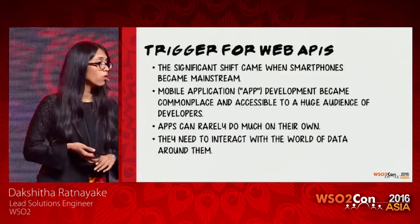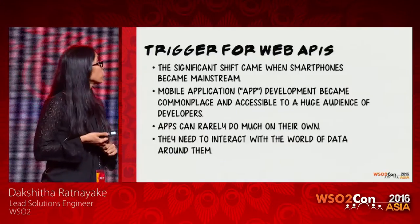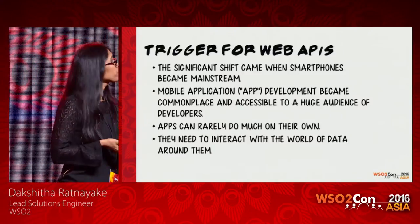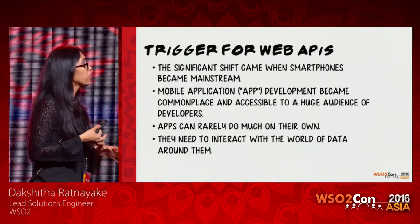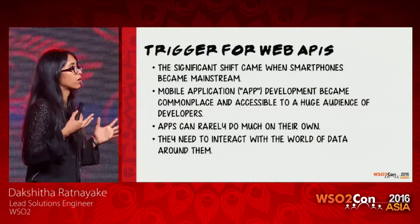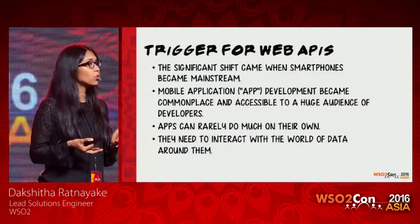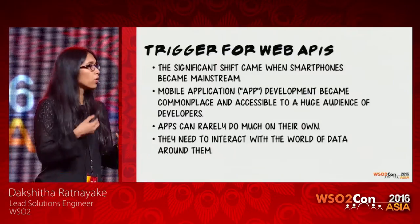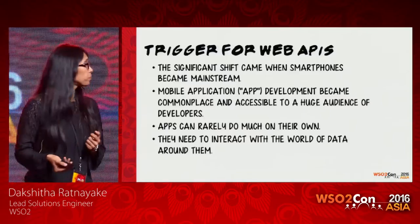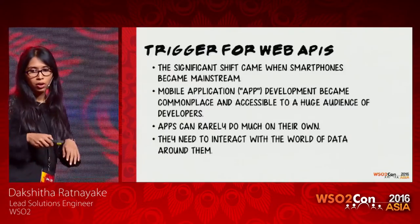The significant shift to web APIs came around 2007 when smartphones with easy-to-access app stores became mainstream. Mobile application development became commonplace and accessible to a huge audience of developers. Except for a few cases, these application providers could hardly do much without access to data from other companies. It was not only mobile app developers but also rich web app developers who faced this problem. Apps can't do much on their own — they need to interact with the world of data around them, and web APIs came into the picture.